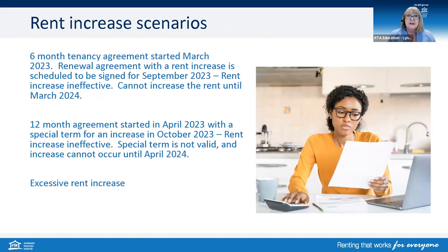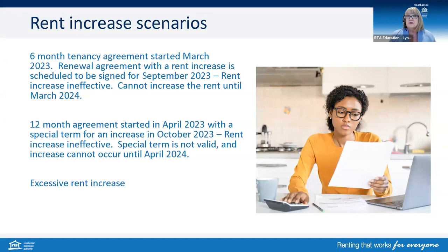To get a better understanding, here are two scenarios. If you have an agreement that started in March 2023, and the rent is scheduled to increase with a renewal agreement in September 2023, and all the tenants are continuing, then the rent increase would be ineffective — you could not increase the rent until March 2024. If you have a 12-month agreement that started in April this year with a special term with a rent increase due in October, again this increase would be ineffective and you could not increase the rent until April 2024.